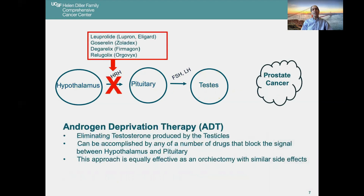Androgen deprivation therapy quite simply represents eliminating the testosterone produced by the testicles. You can do that the way Dr. Huggins did, but you can also use a number of drugs that block the signal between the hypothalamus and pituitary, so the signal doesn't get through and the testicles just don't make testosterone. This approach is equally effective as an orchiectomy, with the same side effects but no surgery.